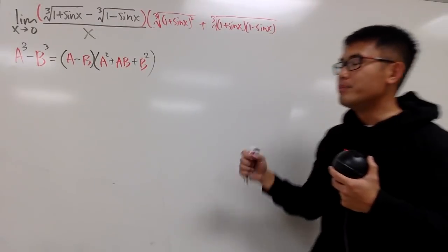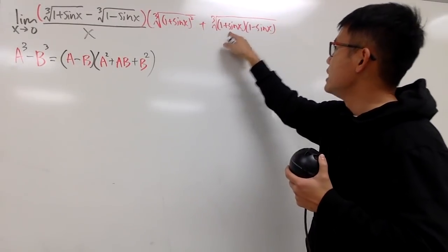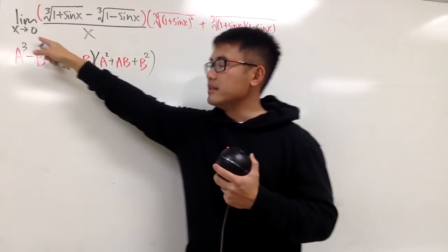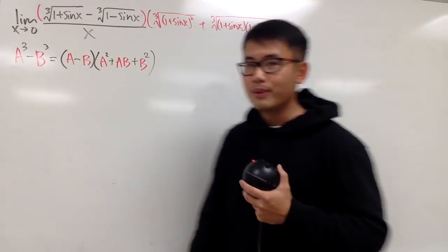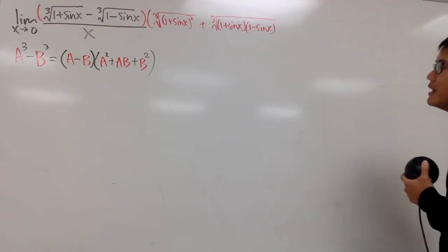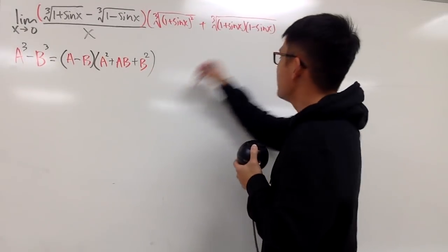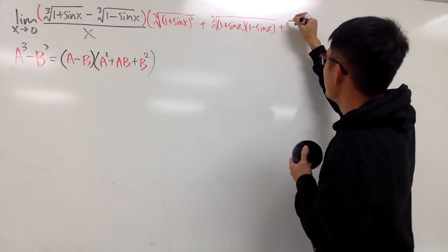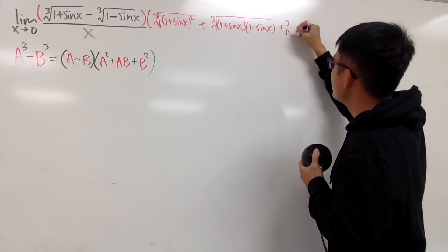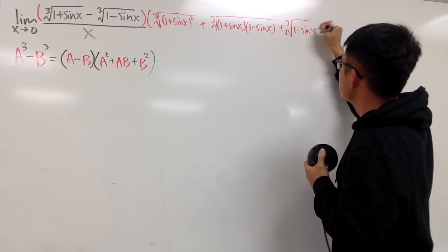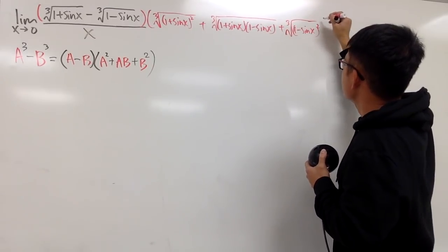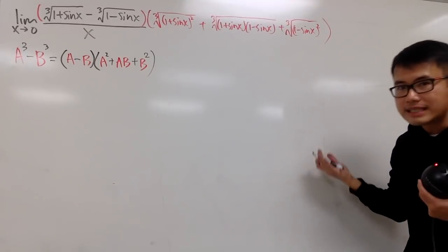Cube root of this times that. So I will just put this down as (1 + sin x)(1 - sin x). And, in fact, we can do so because this is positive, that's also positive when x is approaching to 0, so it's seriously legitimate. Anyway, lastly, we add b^2, which is that thing squared, so this is the cube root of (1 - sin x)^2.